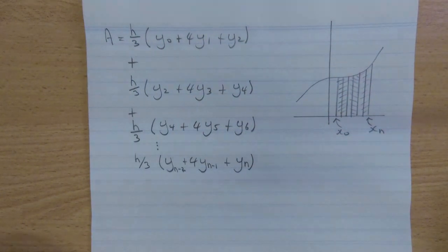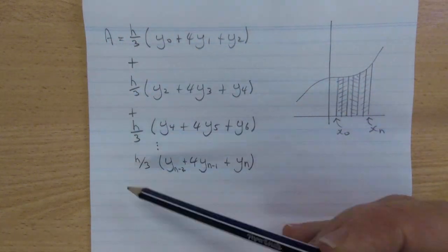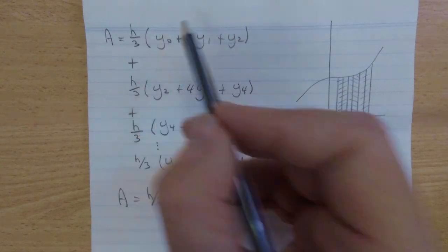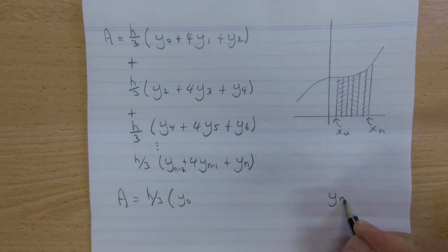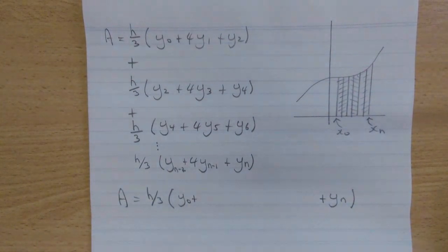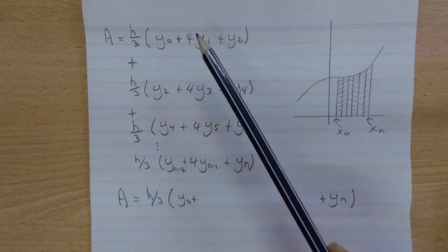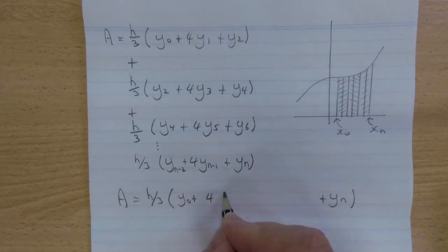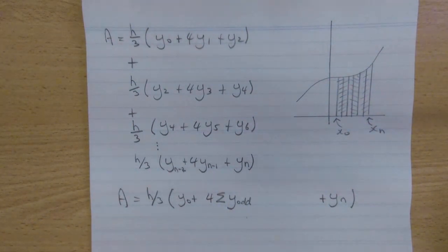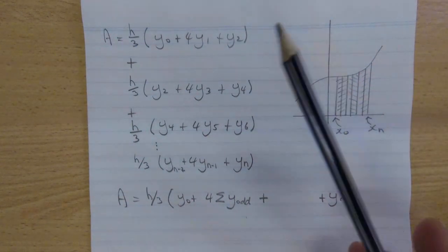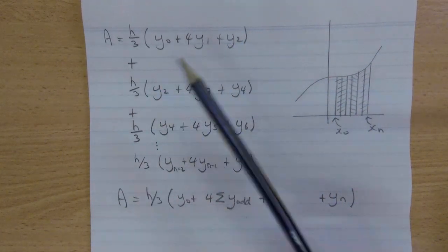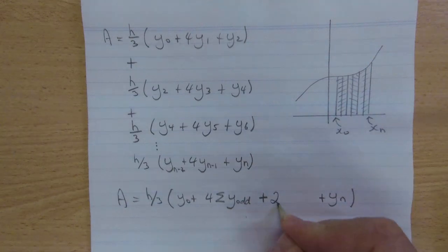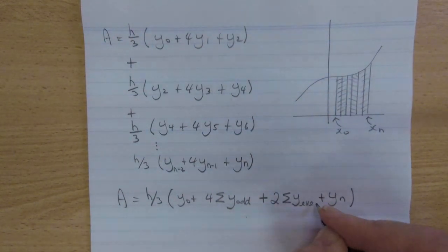Notice that the h over 3's at the front are the same. So our area would have h over 3 at the front. Notice that y0 appears once, yn appears once. y0, yn. They appear once at the start and the end. Now, what about these other ones? Well, 4 times y1, 4 times y3, 4 times y5, 4 times. All of these are the odd numbered ones. So I have 4 times the sum of any y value which is odd numbered. Now, how about the evens? y2 appears here and here. We'd have two of them. y4 appears twice. We'd have two of them. y6 would appear twice. Every even numbered one would appear twice. So we'll have two times the sum of the even numbered y coordinates.